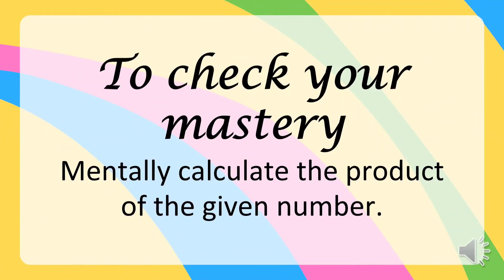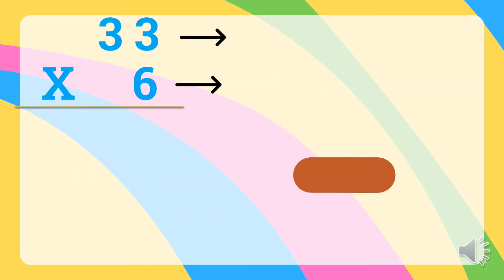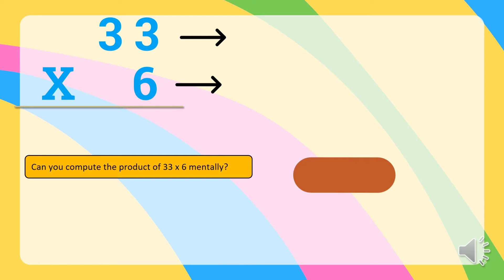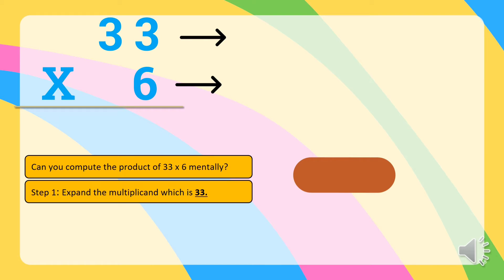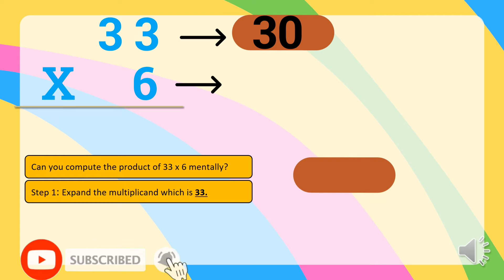To check your mastery, mentally calculate the product of the given number. So let's try to multiply 33 and 6 mentally. Can you compute the product of 33 times 6 mentally? Step one is to expand the multiplicand, which is 33. Let's expand 33: 30 plus 3.